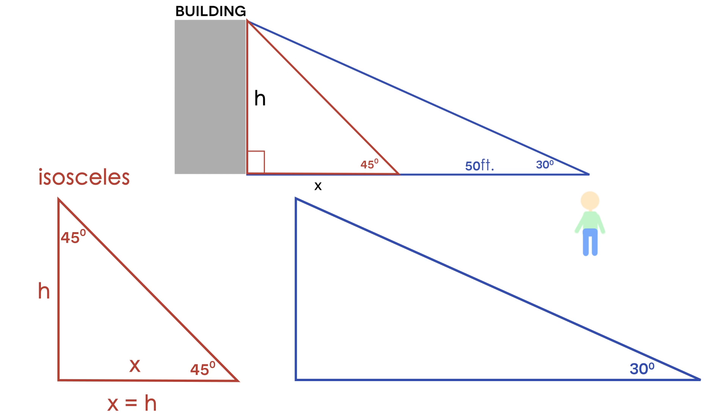Alright, so now that we know that x is equal to h, now let's take a look at the other triangle that has a 30 degree angle.